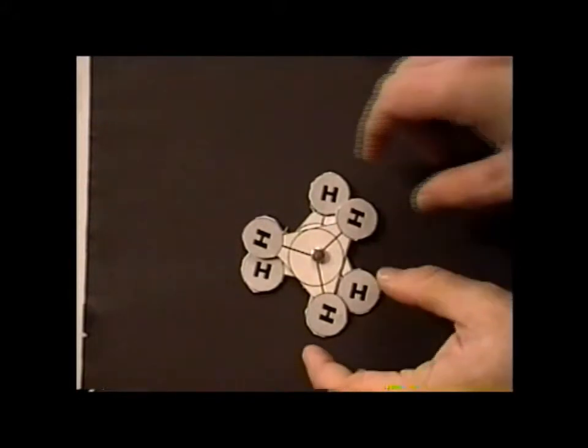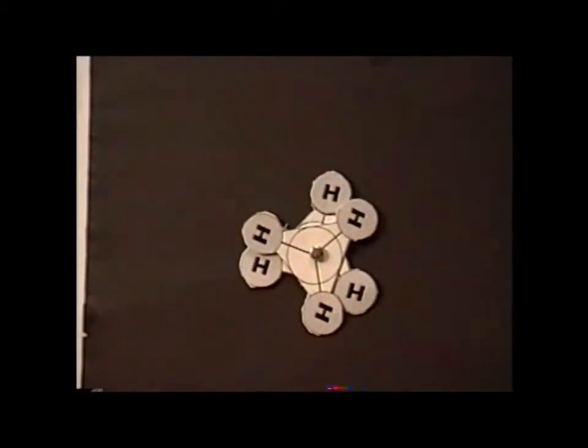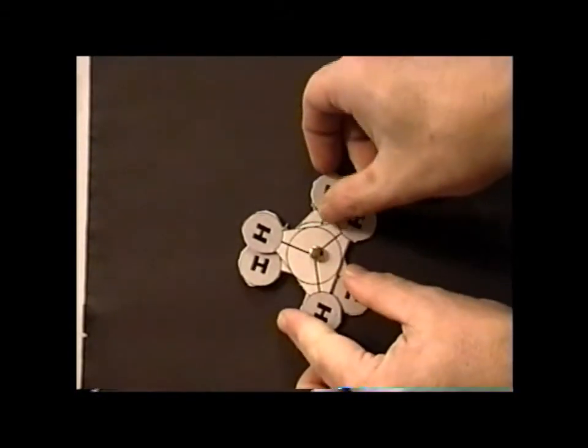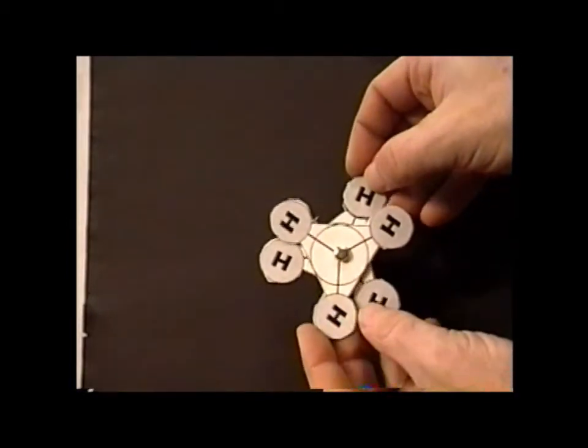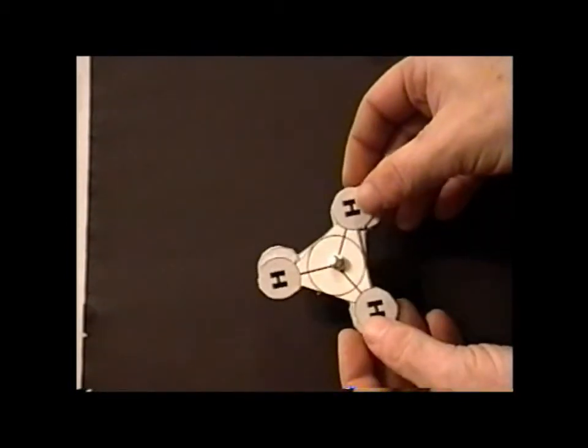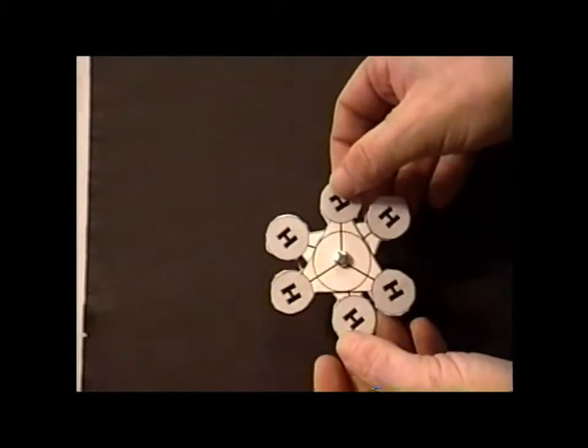Now, one advantage to making a model of a Newman projection, as opposed to simply drawing it on a piece of paper, is the following. The first is we are free to move the substituents to make any of the conformations that we are interested in.